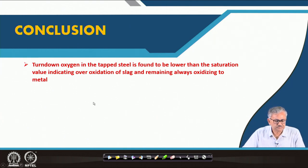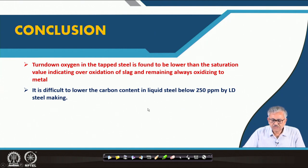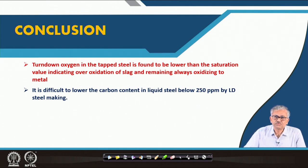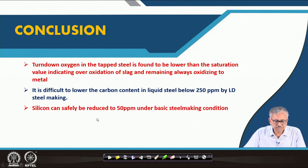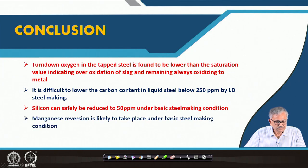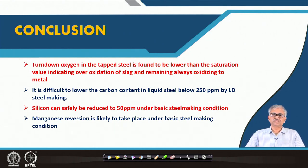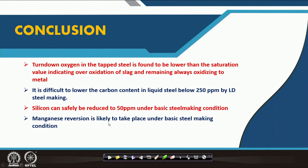It is difficult to lower carbon in liquid steel below 250 ppm by the LD process at one atmospheric pressure. For very low carbon steel, vacuum is required — the carbon-oxygen reaction responds very significantly because the product is a gas. Silicon can safely be reduced to ~50 ppm under basic steelmaking conditions, though kinetics limits it. Manganese reversion is likely under basic slag because MnO activity increases, driving the reaction in reverse. In the next lecture, I will talk about dephosphorization. Thank you.